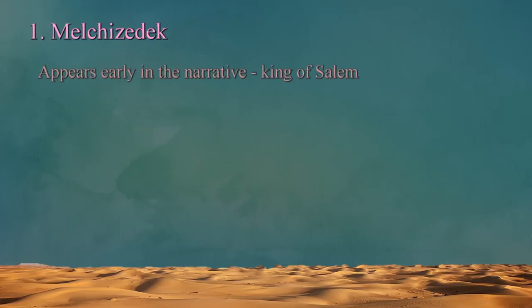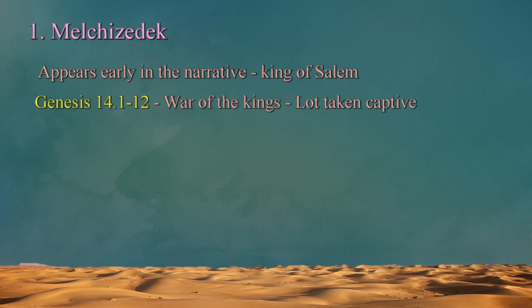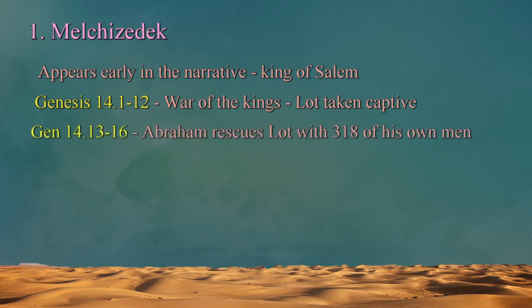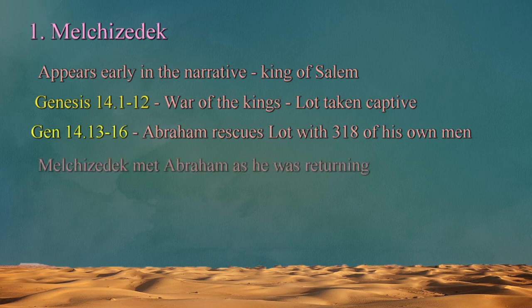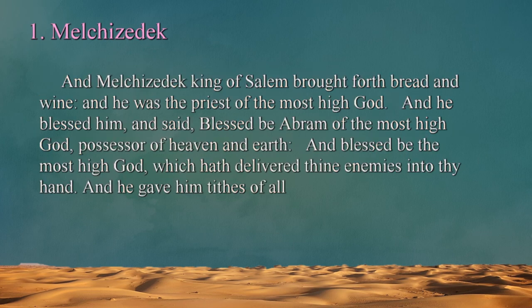An enigmatic figure that appears early in the narrative is Melchizedek, the king of Salem. Abraham's nephew Lot, who was living in Sodom, had been taken captive during a war involving two groups of kings in Genesis 14:1-12. When Abraham heard that Lot had been taken, he gathered a force of 318 men and rescued him in Genesis 14:13-16. As Abraham was on his way back, he was met by Melchizedek, king of Salem, who brought forth bread and wine — he was the priest of the Most High God. He blessed Abraham and said, 'Blessed be Abram of the Most High God, possessor of heaven and earth, and blessed be the Most High God which hath delivered thine enemies into thine hand,' and Abraham gave him tithes of all, in Genesis 14:18-20. The account is covered in three verses, but it's a significant event, as we find later in the scriptures.